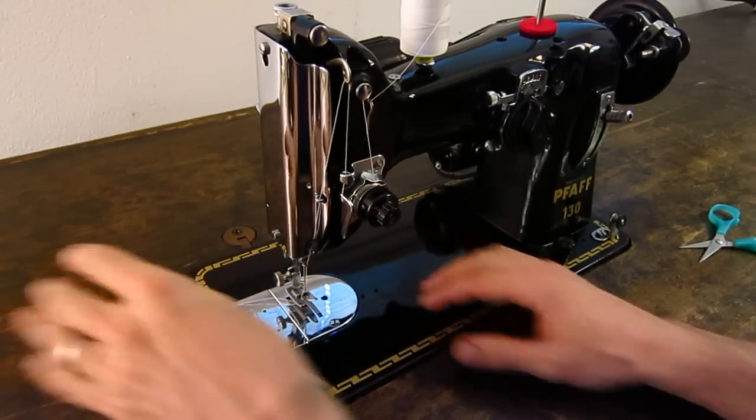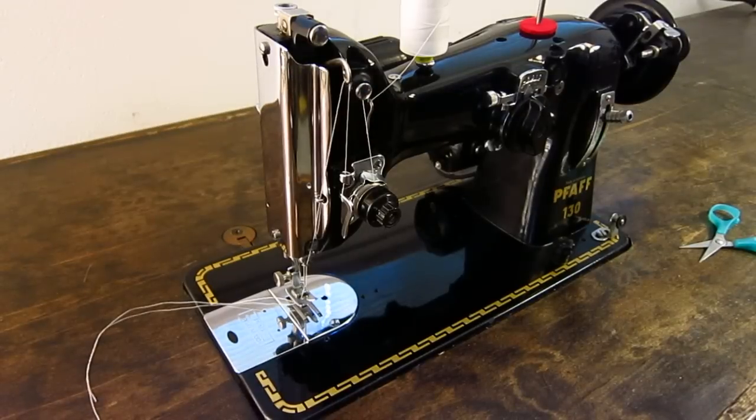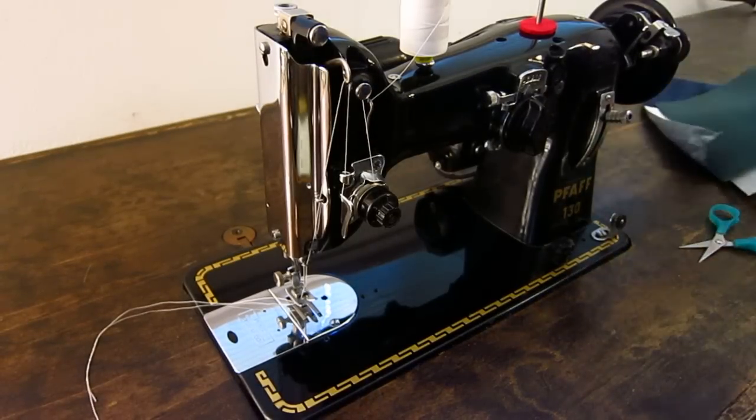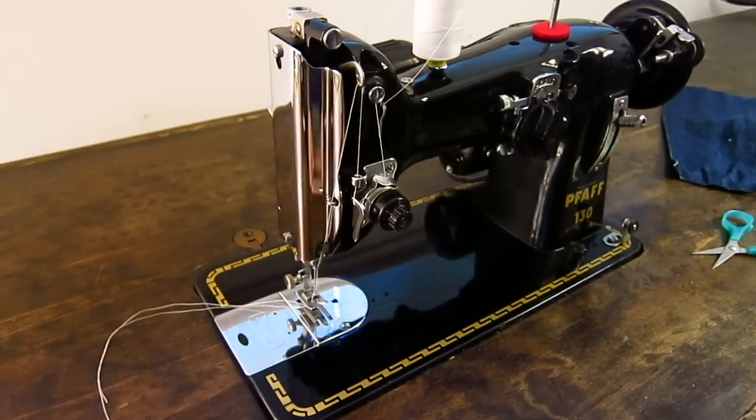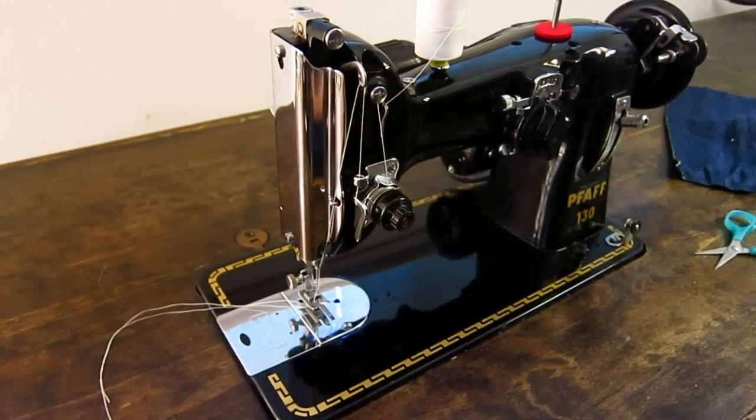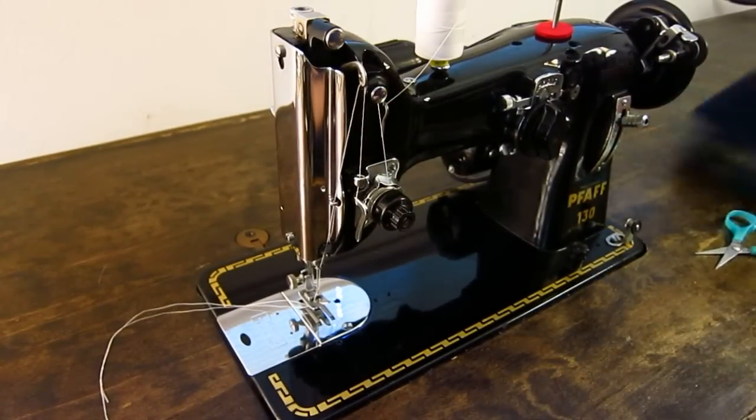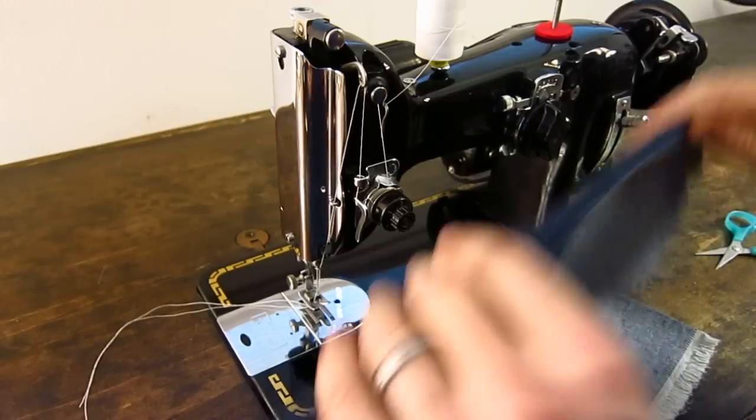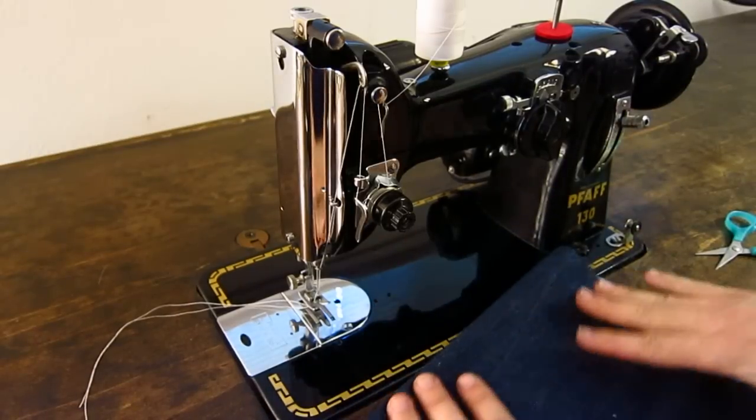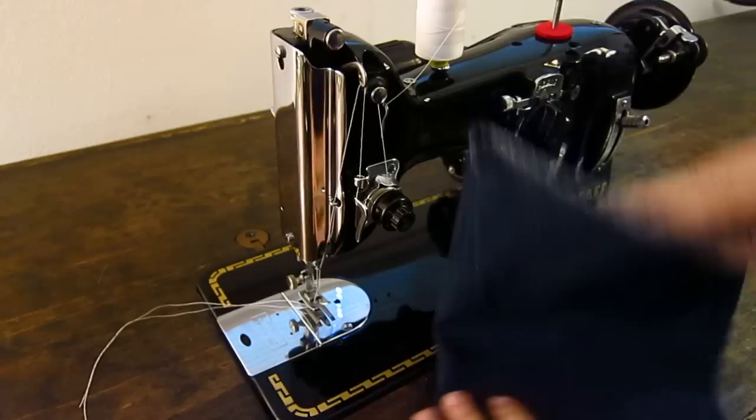So the needle in here is an Oregon 16/100. Had pretty good experiences with these needles. On a thread like this, this thick, the tex 40, it's a pretty good option. So here's some denim, that's pretty heavyweight stuff. Let's do four layers.